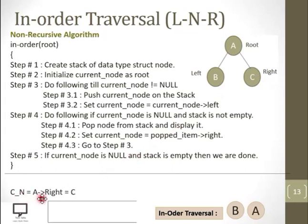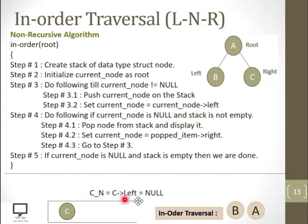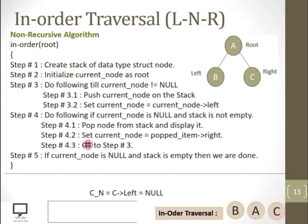Current node is null — condition false for step 3. Return to step 4: current node is null and stack is not empty — both true. Pop top of stack: A. Display A. Update current node to A's right child, which is C.